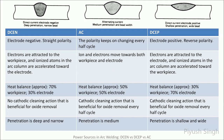In DCEN, approximately 70% of the heat is concentrated in the workpiece and the remaining at the electrode. The opposite is observed in DCEP. In AC, heat is equally distributed between the workpiece and the electrode. AC and DCEP are capable of cathodic cleaning, which removes the oxide layer from materials like aluminum. This phenomenon is not observed in DCEN, making AC and DCEP the preferred choice for welding materials like aluminum. DCEN has the highest penetration and the narrowest weld zone, while DCEP has the least penetration and the broadest weld zone. The penetration in AC lies between DCEN and DCEP.